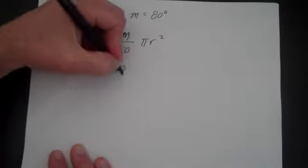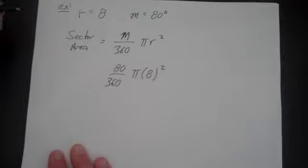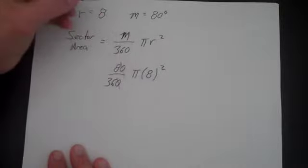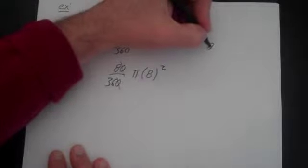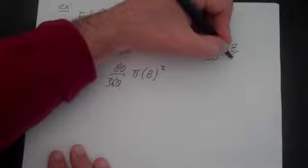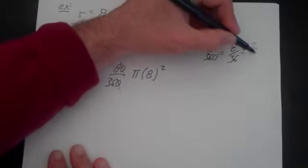This is 80 over 360 times pi times 8 squared, or 64. Let's simplify the 80 over 360. The zeros go away, right? So that's 80 over 360 is equal to 8 over 36. And I think that 4 goes into both of those. That would be 2 over 9.